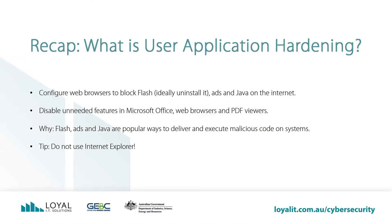Recap: What is user application hardening? As previously discussed in the informational video, Essential 8 Topic 7, Application Hardening refers to preventing the running of malware or code that was unintentionally run by turning off unnecessary features in applications. The Essential 8's user application hardening revolves around hardening the web browser and Microsoft Office, as these are applications you will typically use in your day-to-day business, but you may not necessarily need some of these advanced features turned on.